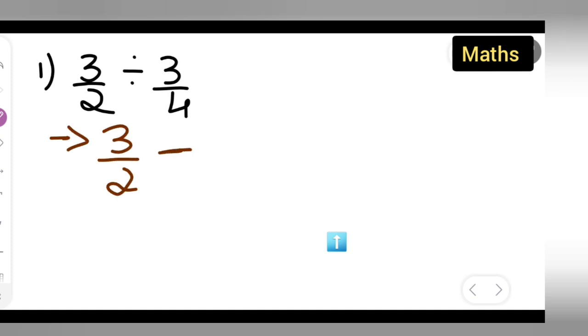3 upon 2 divided by 3 upon 4. Next step is, write down 3 upon 2. How are we going to divide this with 3 upon 4? Just multiply this with the reciprocal of this multiplier. What is the reciprocal of 3 upon 4? 4 upon 3. Write down 4 upon 3.